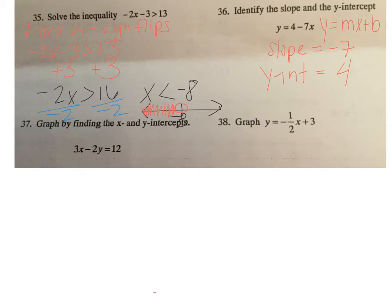So to graph by finding the x and y-intercepts, we can find the x-intercept by plugging in 0 for y, because all of the points on the x-axis have a y-value of 0. So we get 3x minus 2 times 0 equals 12, and 3x equals 12. So x is 4. And this is actually the point 4 comma 0. It's on the x-axis.